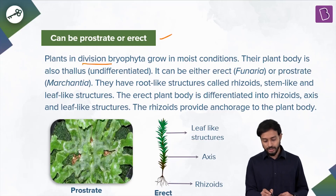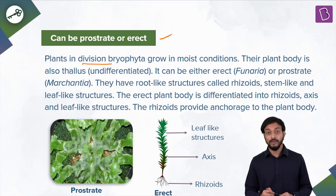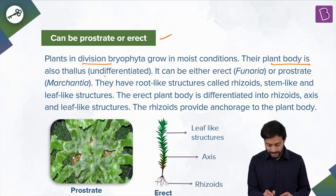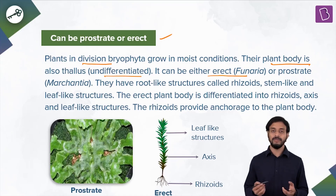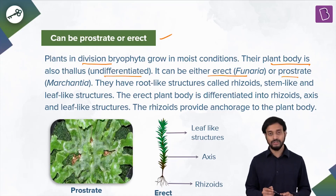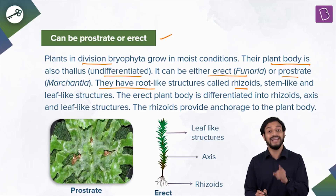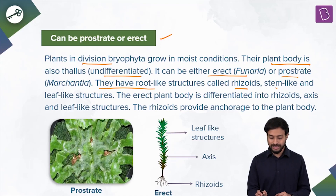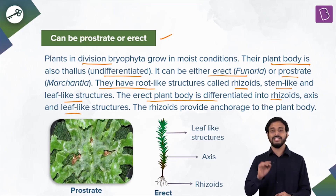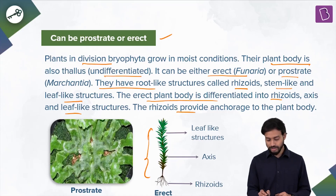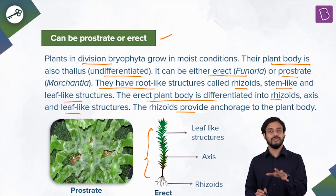We are correct. Plants in division Bryophyta grow in moist conditions. The plant body is a thallus — undifferentiated — and can be either erect, for example Funaria, or prostrate, for example Marchantia. They have root-like structures called rhizoids — not actual roots. The erect plant body is differentiated into rhizoids, axis, and leaf-like structures. The rhizoids provide anchorage to the plant, similar to the function of roots, but they are not actually roots.